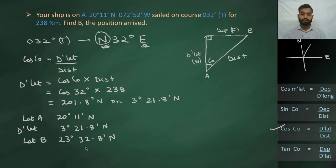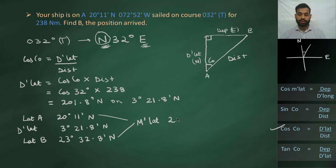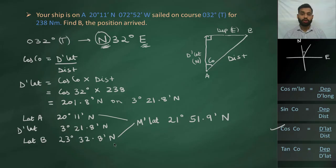Now that we have the latitude of the initial position and the latitude of the final position, we can find the mean latitude between these two points. The MLAT will be the arithmetic mean of both latitudes: 20 degrees 11 minutes plus 23 degrees 32.8 minutes divided by 2, which comes out to be 21 degrees 51.9 minutes. As both points are in the northern hemisphere, MLAT is also north.